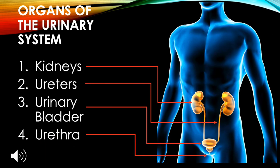The organs of the urinary system are the kidneys, ureters, urinary bladder, and urethra.